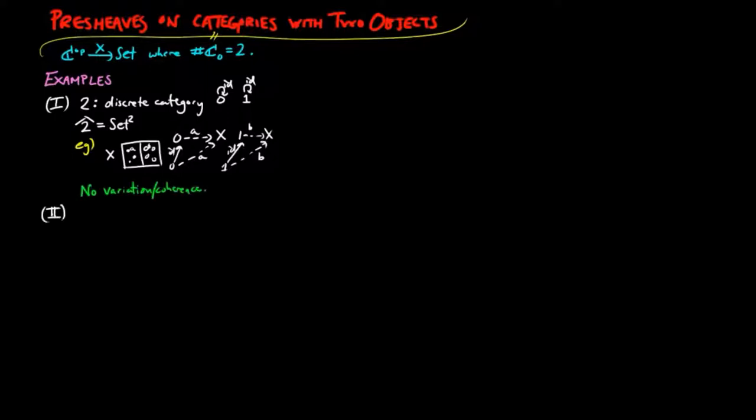The second example is when there is one non-identity morphism between the two objects. In this case, the category of pre-sheaves is the category of bouquets.